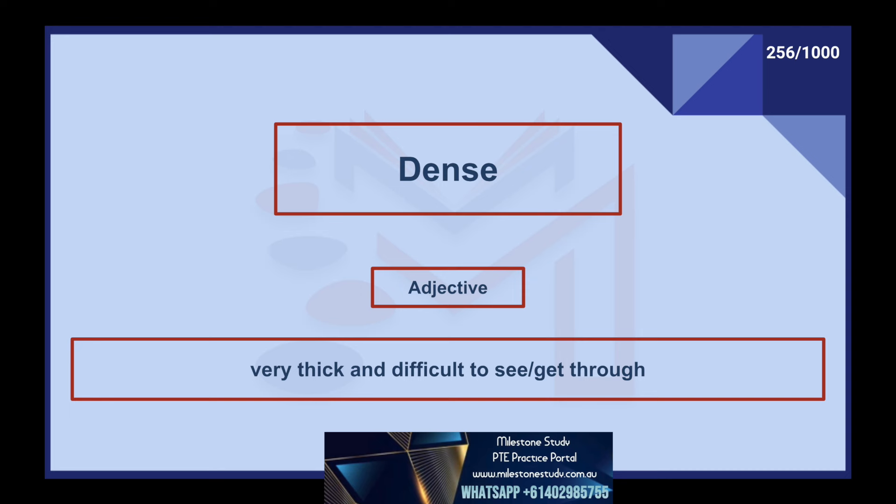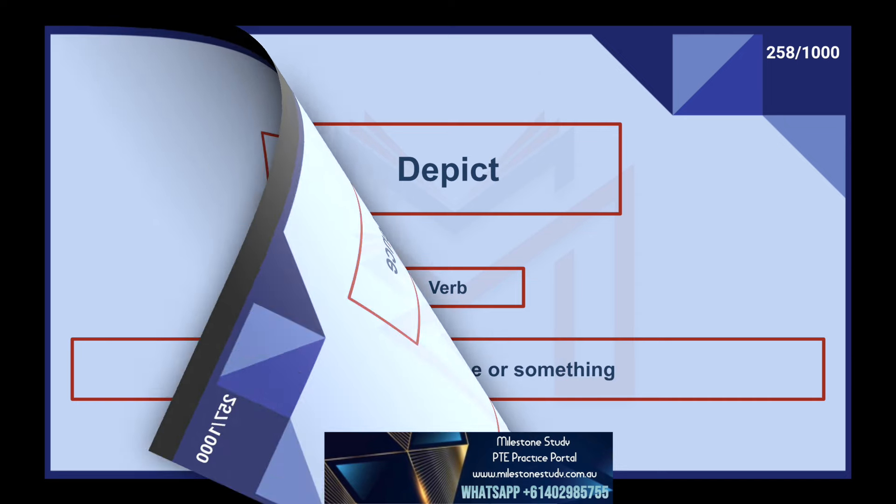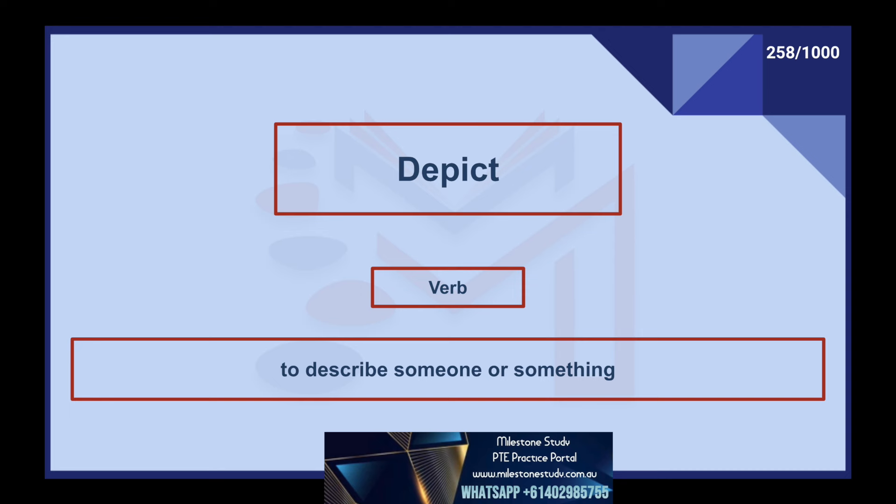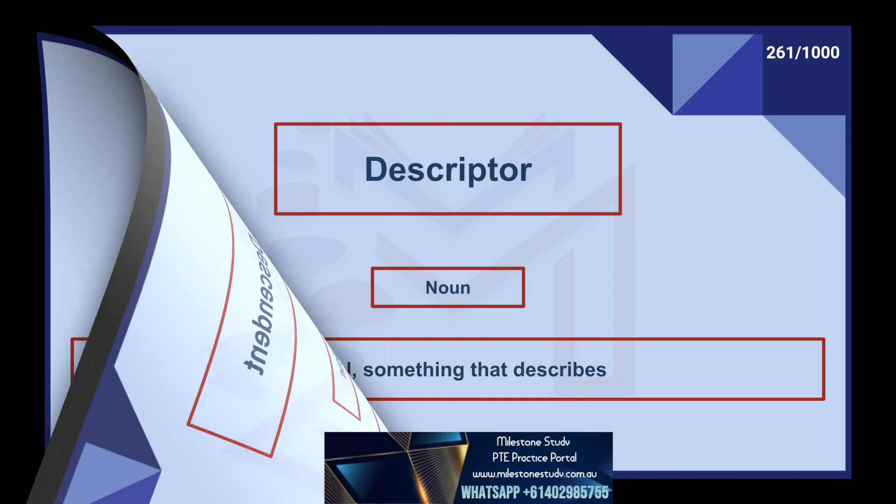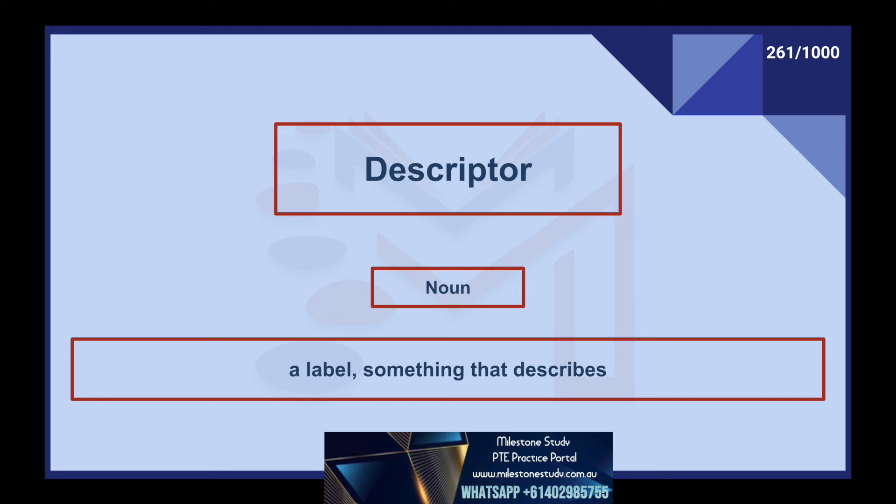Dense, adjective: very thick and difficult to see, get through. Dependence, noun: relying on someone for support. Depict, verb: to describe someone or something. Derivation, adjective: something that has developed or been obtained from something else. Descendant, adjective: descending from an ancestor. Descriptor, noun: a label, something that describes. Destination, noun: the place one is traveling to.